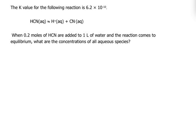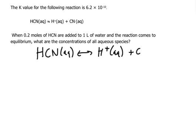Here's another problem where an ICE chart will be helpful. I'll write HCN aqueous, and that is going to become H+ aqueous and CN- aqueous, with an ICE chart. And unlike a problem that involves a solid, this is aqueous, so we actually do have to account for it. It's only if it's solid or liquid that we can pretty much ignore it.